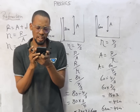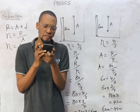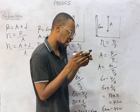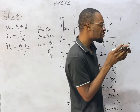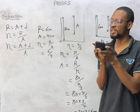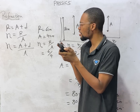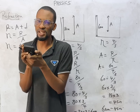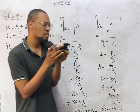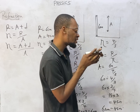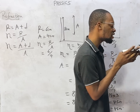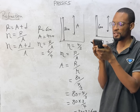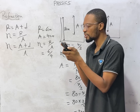An object placed at the bottom of a well full of clear water appears closer to the surface due to — A: refraction, B: diffraction, C: reflection, D: diffraction. The correct answer is refraction, because the bending of light at the water-air interface causes objects to appear shallower than they actually are.